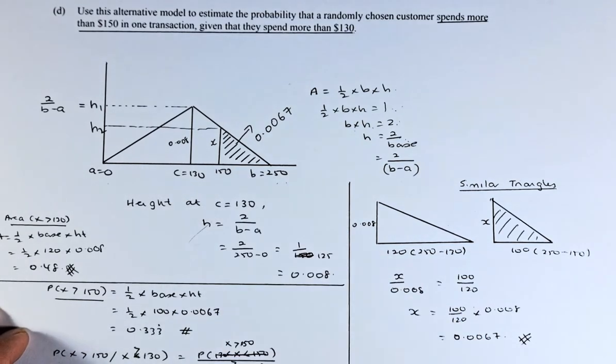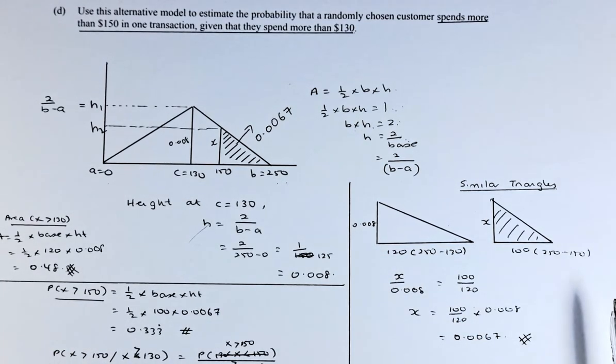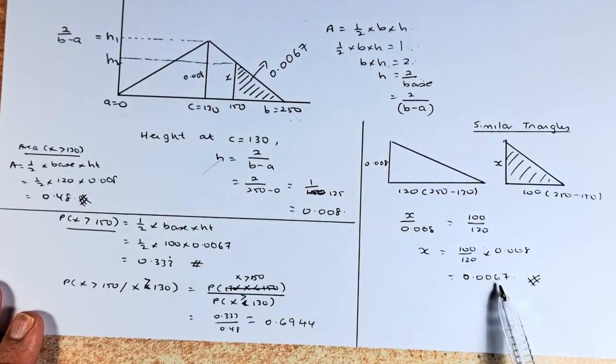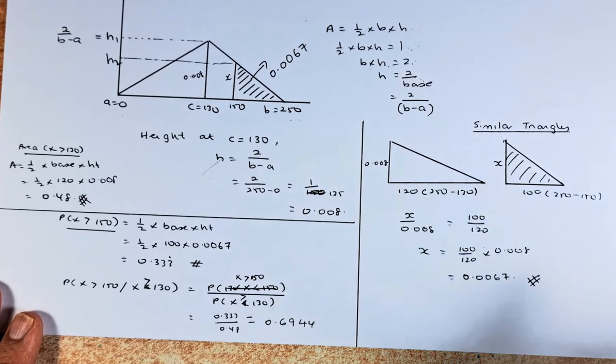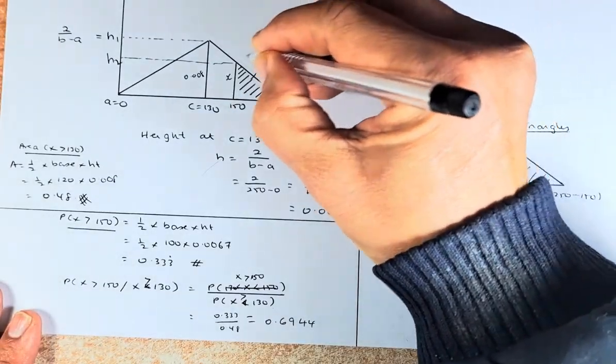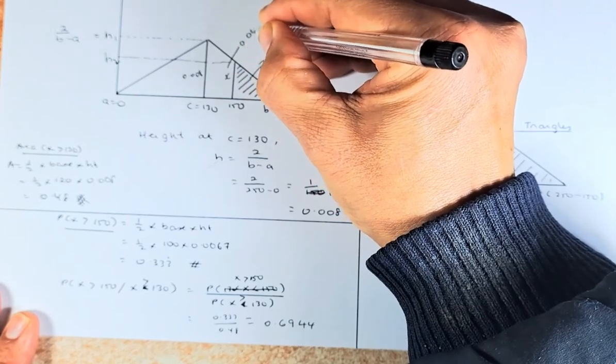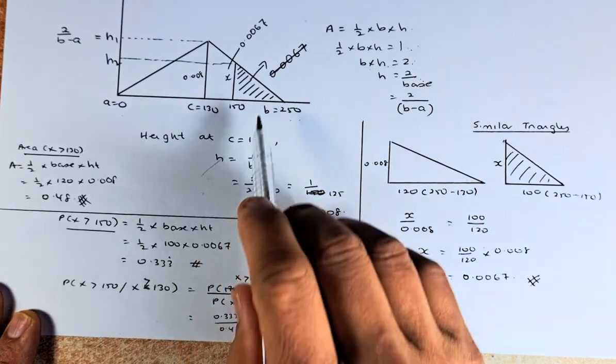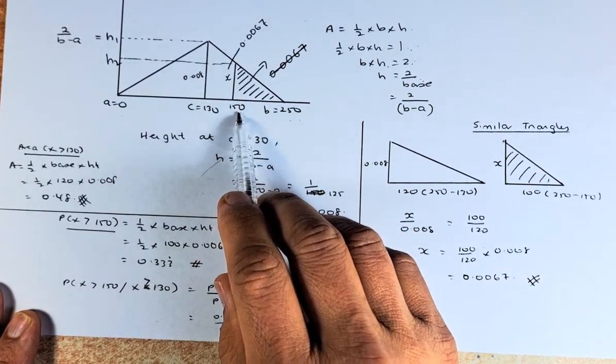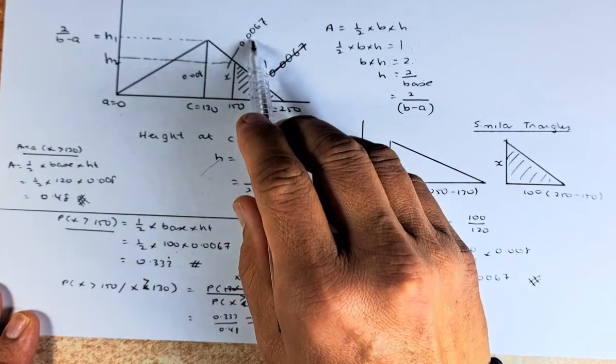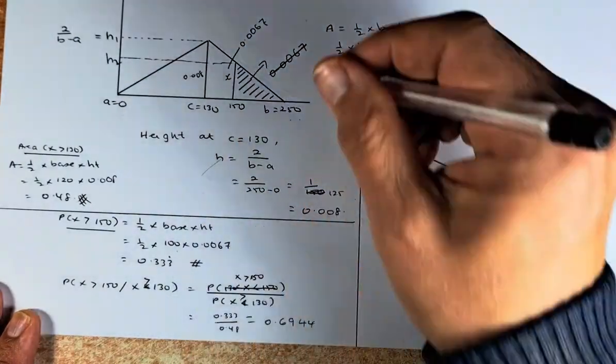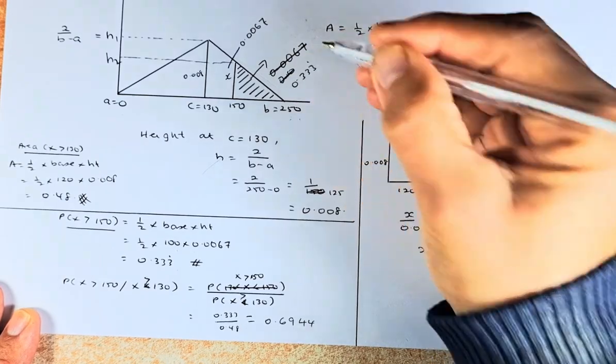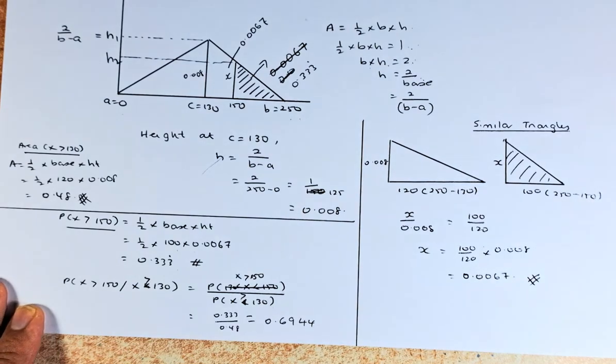Now we know the area there. We are going to answer the question. Before that, 0.0067 is actually the height, not the area. So 0.0067 is the height of the triangle. To calculate the area, we need to use half times base times height. So half times base, 150 to 250 is 100, and the height is 0.0067. The answer is 0.333 recurring. So the area is 0.3333.